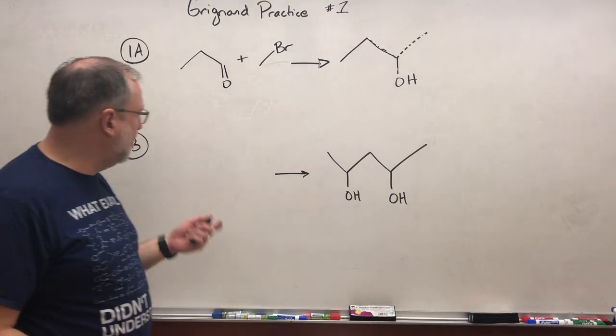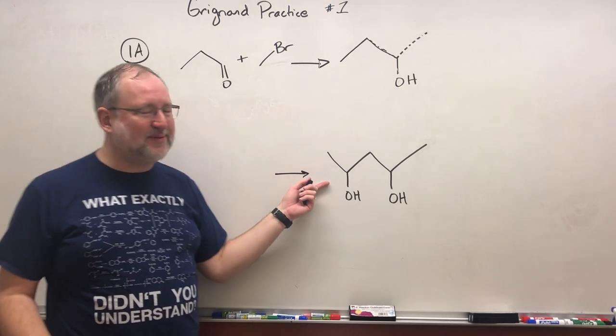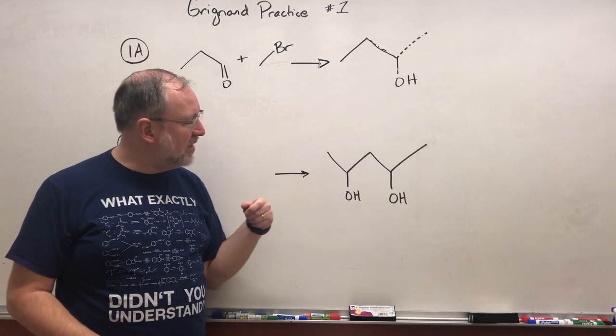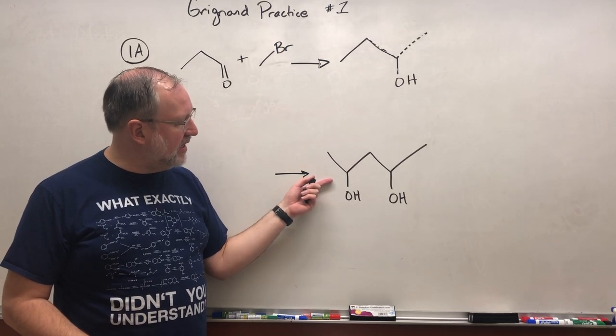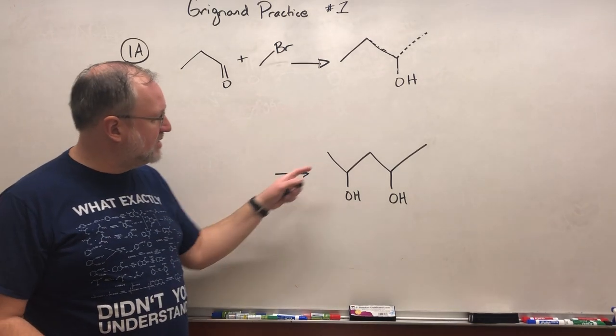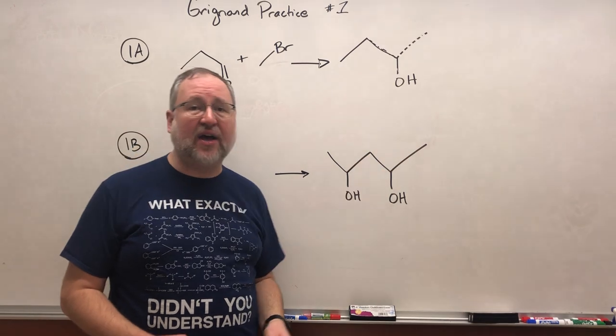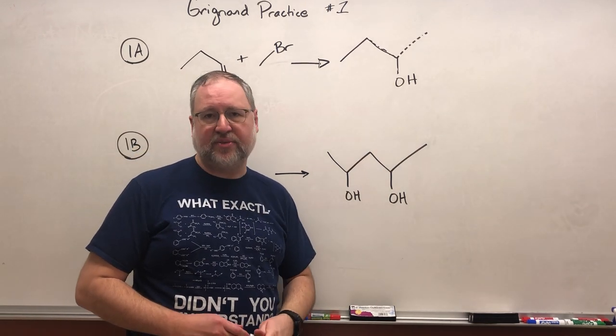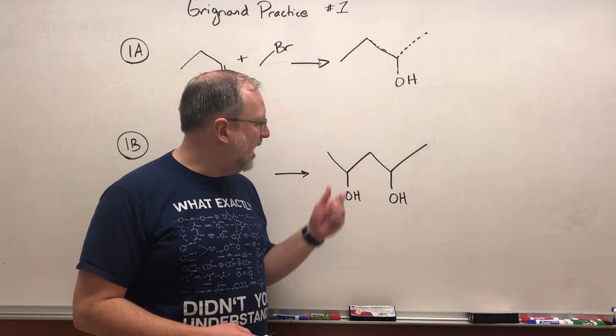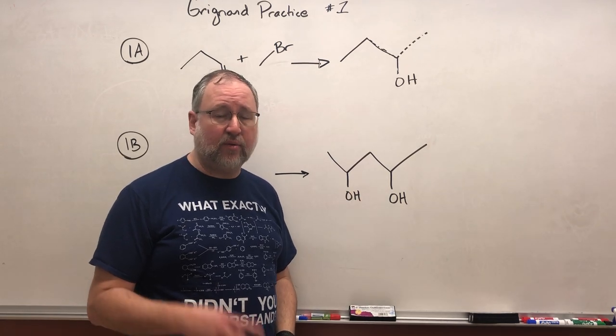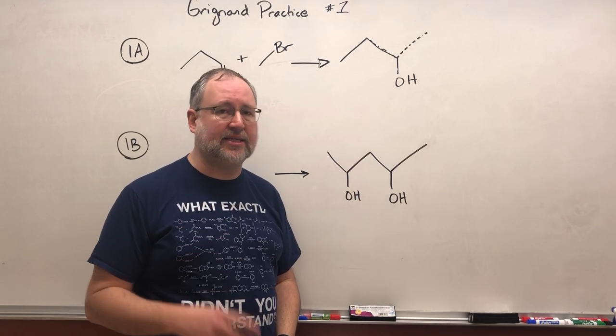Let's do the same thing with 1B. So over here with 1B I have something slightly more complicated. Why don't you see if you can write some reactants for this. The product looks like it has five carbons. So please use something that has fewer than five carbons. And why don't you see if you can do it in such a way where there are only two different organic reactants.